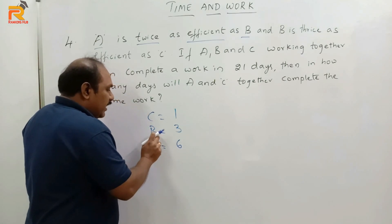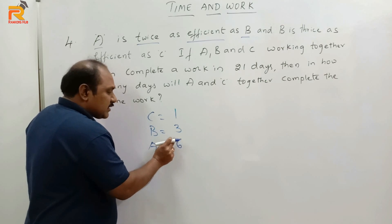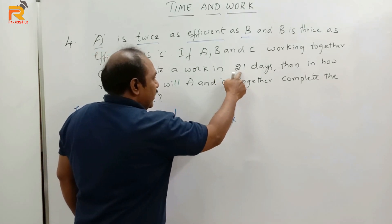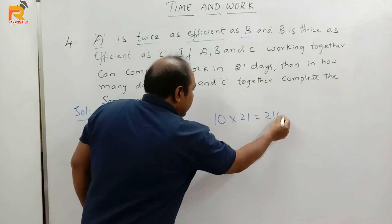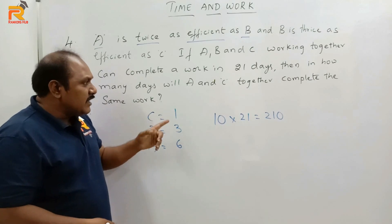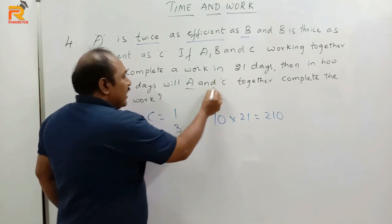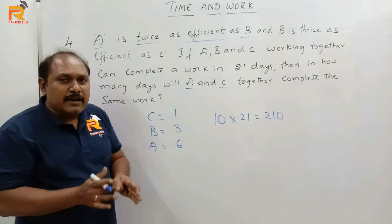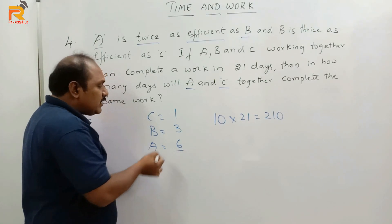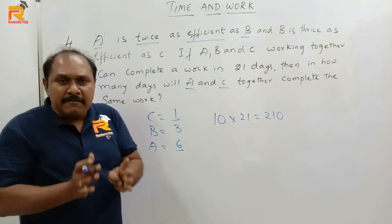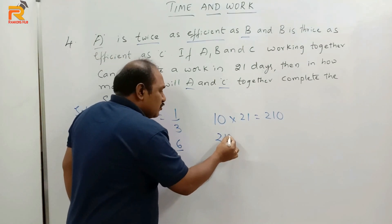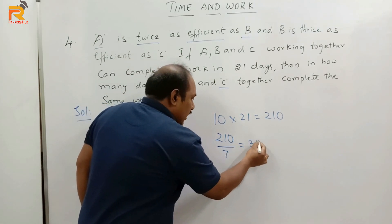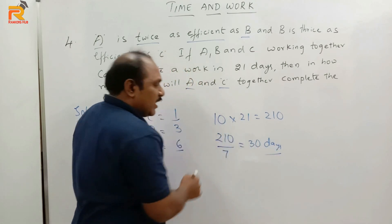Together A, B and C eat how many chocolates per day? Six plus three plus one equals 10 chocolates per day. Together they can complete the work in 21 days, so the total work is 10 × 21 = 210 chocolates. Now, in how many days will A and C together complete the same work? A eats 6 per day and C eats 1 per day, so together they eat 7 chocolates per day. To complete 210 chocolates, they will take 210 ÷ 7 = 30 days.